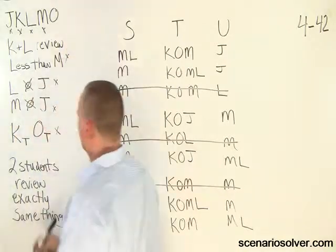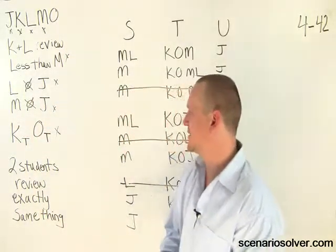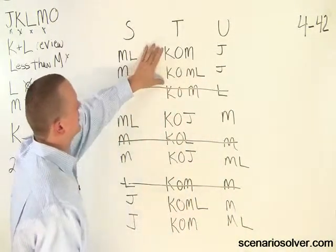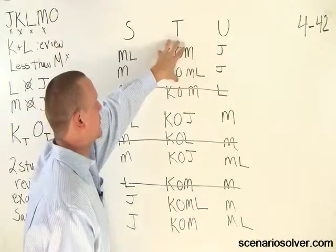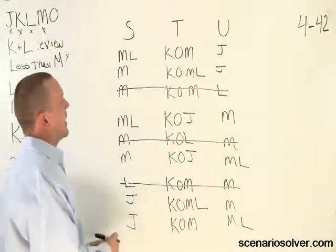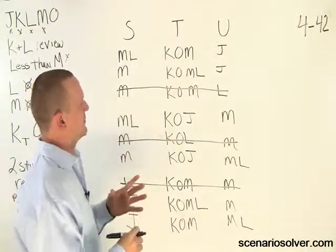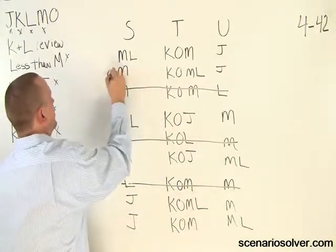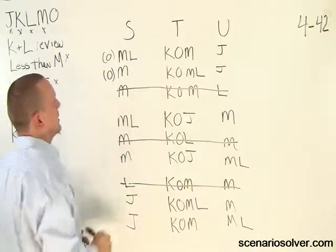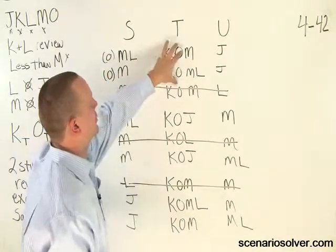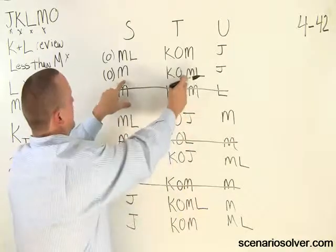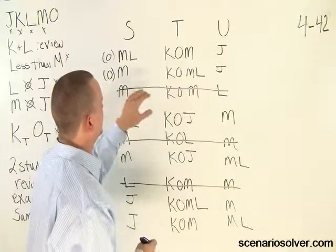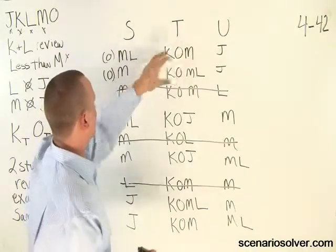We've exhausted all the rules except for this: two students review exactly the same thing. Well, if we look right here, K and O are two students that review exactly the same thing. The question becomes, can anything else happen? Well, if you were to put an O over here — and I'll put it in parentheses — K and O are no longer doing the same thing, but M and O could be doing the same thing. So in that situation, we no longer have K and O doing it, but M and O are.